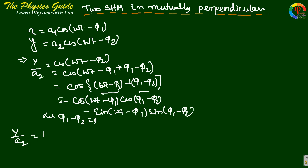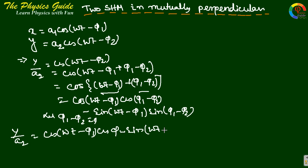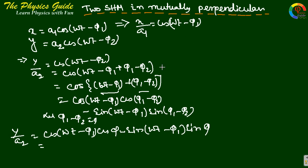So y/a2 = cos(ωt - φ1)·cos φ - sin(ωt - φ1)·sin φ. From the first equation, x/a1 = cos(ωt - φ1), and sin(ωt - φ1) = √(1 - cos²(ωt - φ1)) = √(1 - x²/a1²).